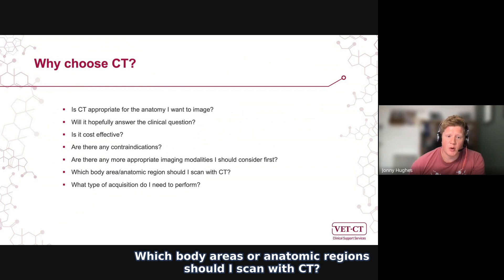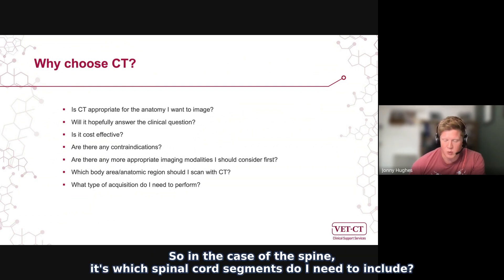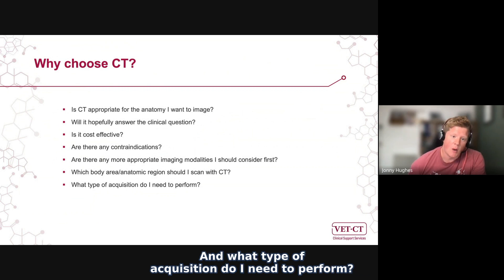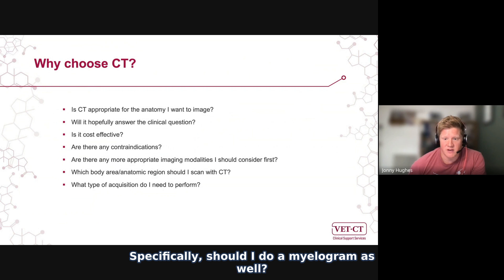Which body areas or anatomic regions should I scan with CT? In the case of the spine, it's which spinal cord segments do I need to include? And what type of acquisition do I need to perform? Specifically, should I do a myelogram as well?